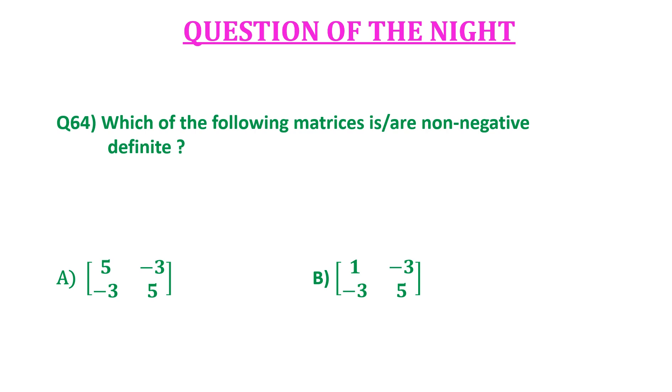The options are: A - matrix with entries 5, -3, -3, 5; B - matrix with entries 1, -3, -3, 5; C - matrix with entries 1, 3, 3, 5; and D - none of them. You can pause the video here and try it yourself.